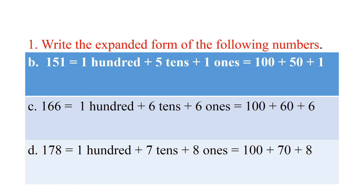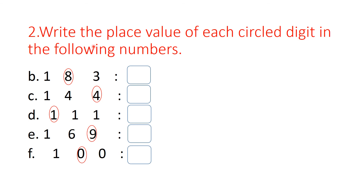Children, you are all very intelligent in answering. Hope you have all understood place value, face value, and expanded form. Now let's see a few more examples based on place value and face value. Write the place value of each circled digit in the following numbers. We have to find the place value for the circled digit. Here, 8 is circled — 8 is in the 10's place, so the answer is 80.